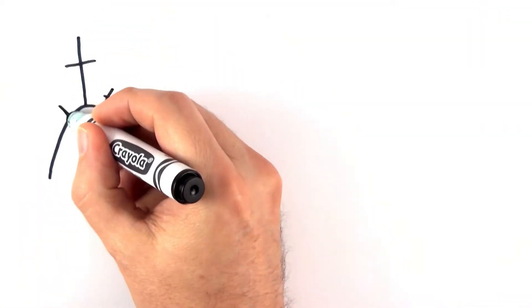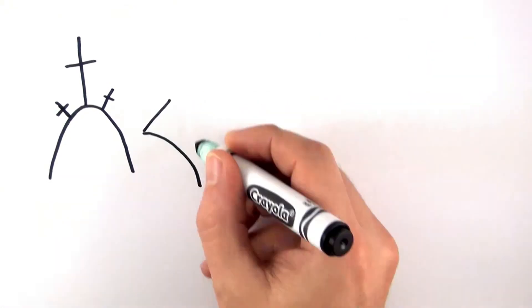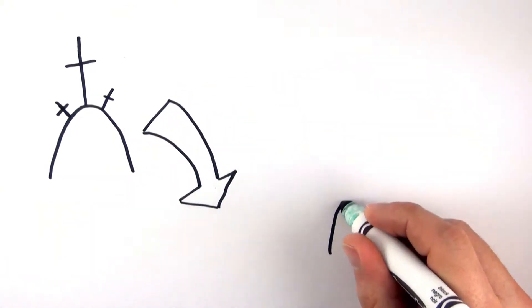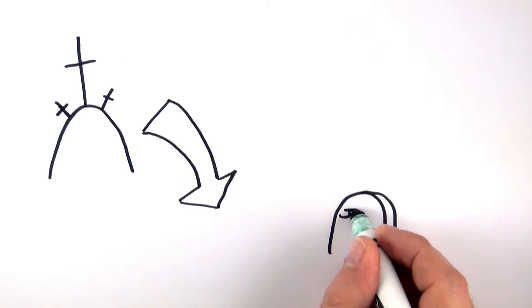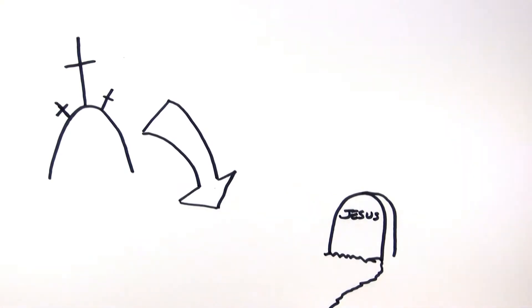Jesus was put to death on a cross. During the times when Jesus was on the earth, crucifixion was a method of capital punishment for criminals. Jesus died and was buried. After three days, God raised Him from the dead.